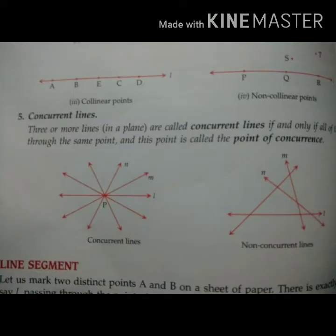Concurrent lines. Three or more lines are called concurrent lines if and only if all of them pass through the same point. It means if three or more lines pass through one point, then they are called concurrent lines.